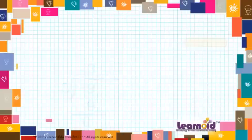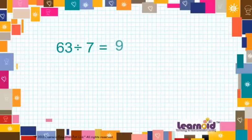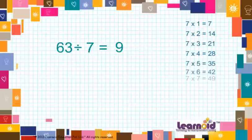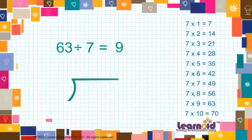Let's check with one more example. 63 divided by 7 is equal to 9. We can show this in long form of division like this.